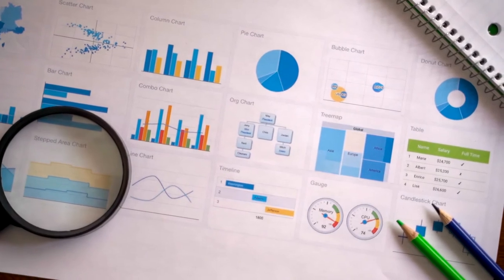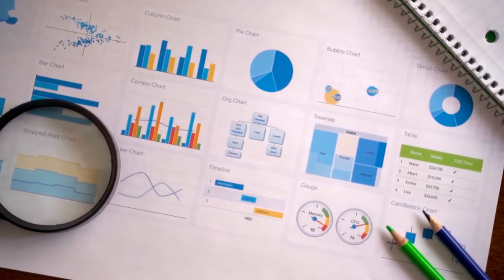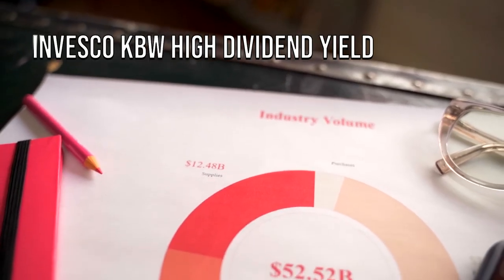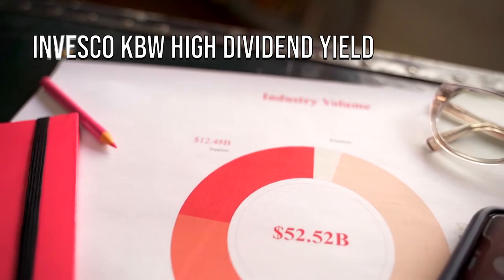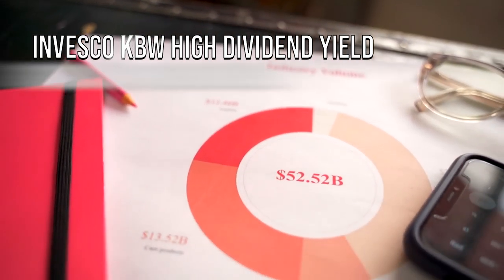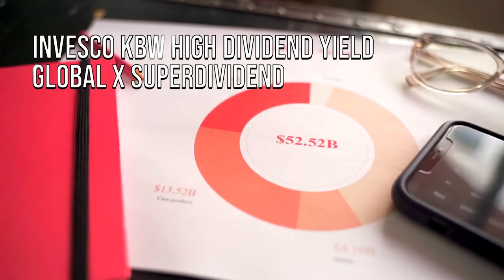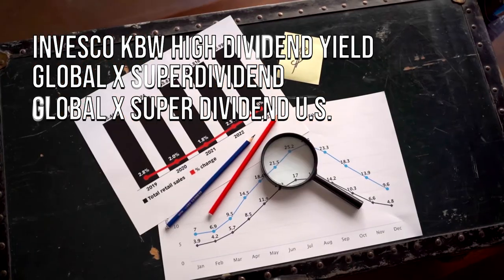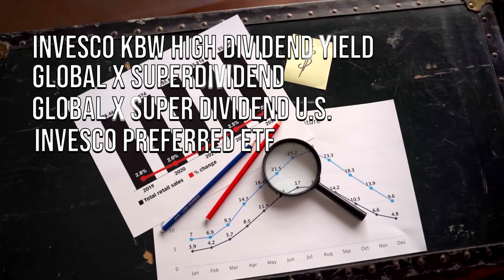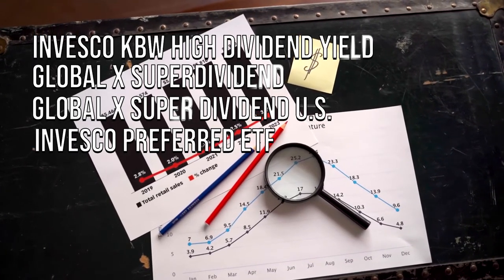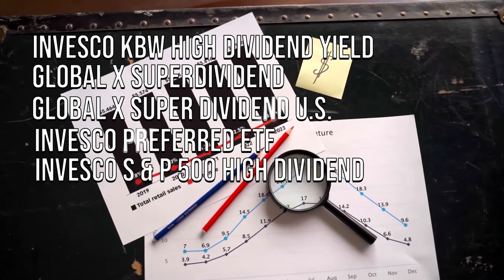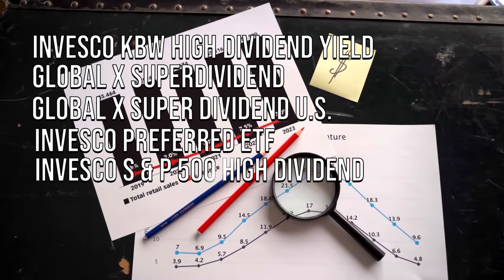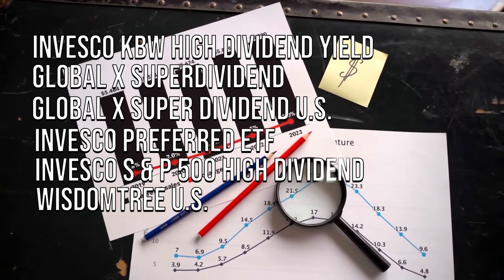So let's recap our top six monthly high dividend yield ETFs. Number one: KBWD, or the Invesco KBW High Dividend Yield Financial ETF. Number two: SDIV, or the Global X Super Dividend ETF. Number three: DIV, or the Global X Super Dividend US ETF. Number four: PGX, or the Invesco Preferred ETF. Number five: SPHD, or Invesco S&P 500 High Dividend Low Volatility ETF. And lastly, number six: DHS, or the WisdomTree US High Dividend Fund.